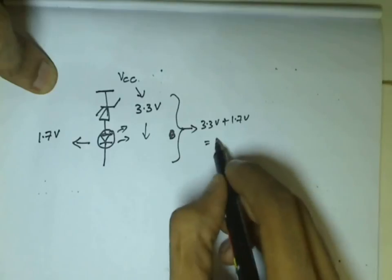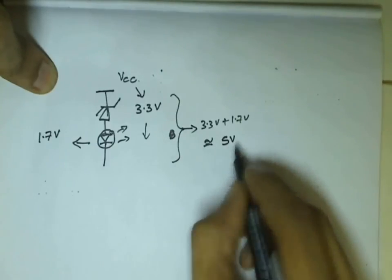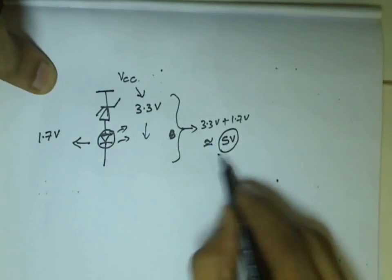Now, the total on voltage for this setup is 3.3 volts plus 1.7 volts. That will be around 5 volts, not 3.3 volts.